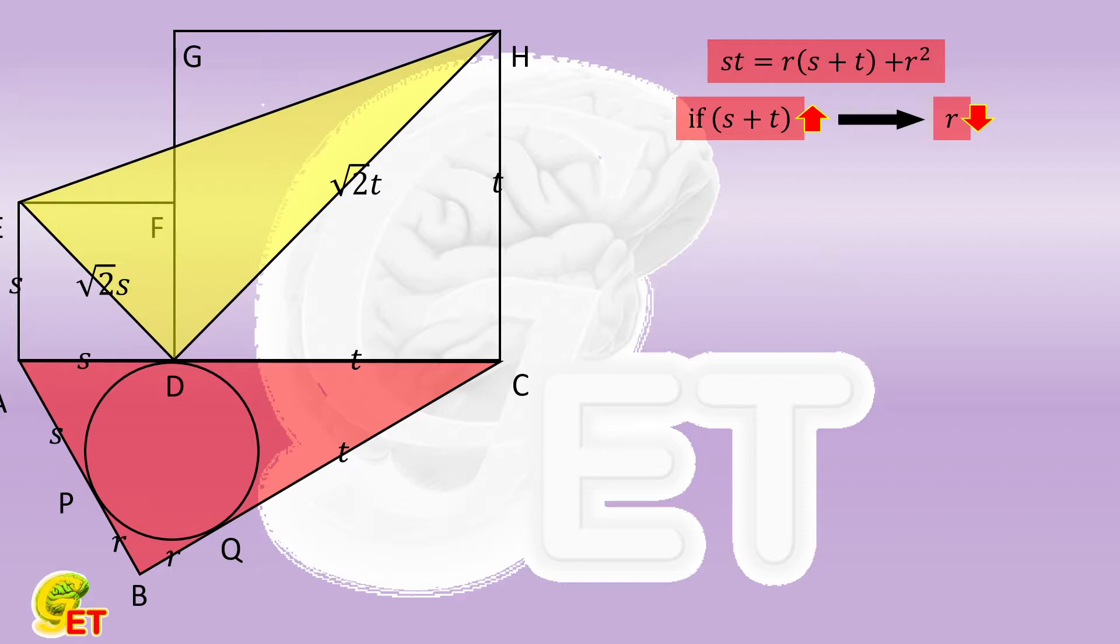We start from the legs of triangle. In the original one, they are S plus R and T plus R, respectively. And in the new triangle, they become square root of 2 times S and square root of 2 times T.